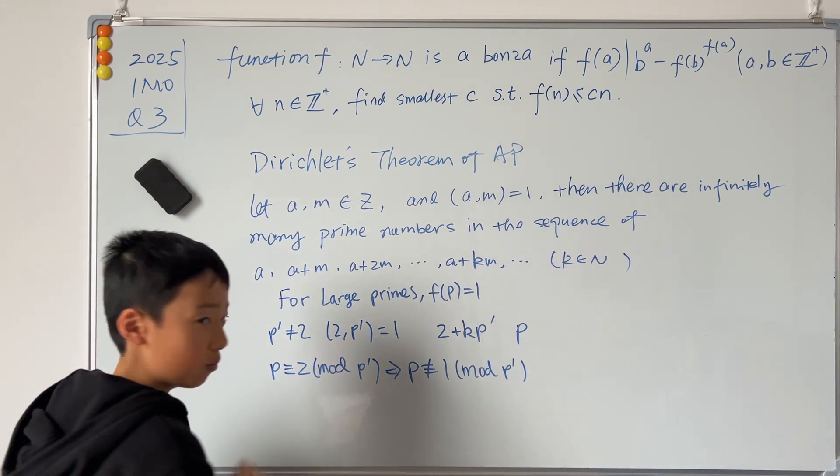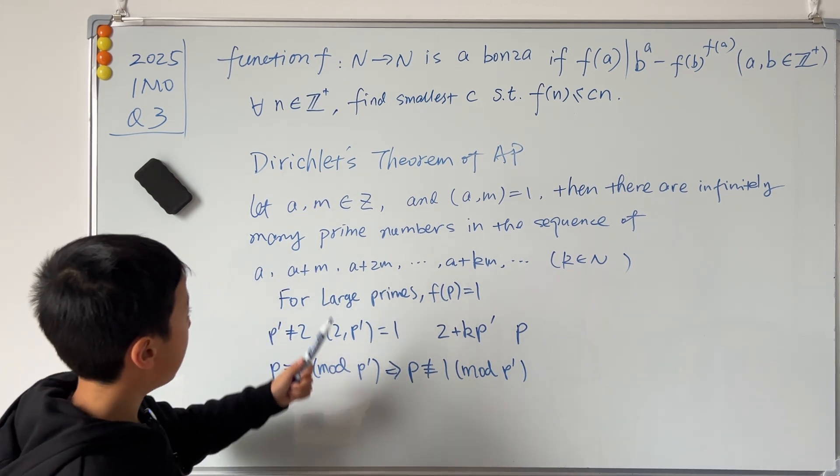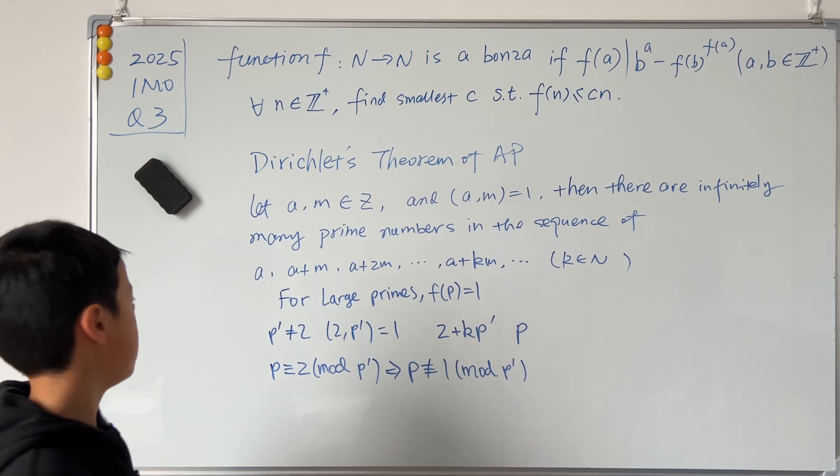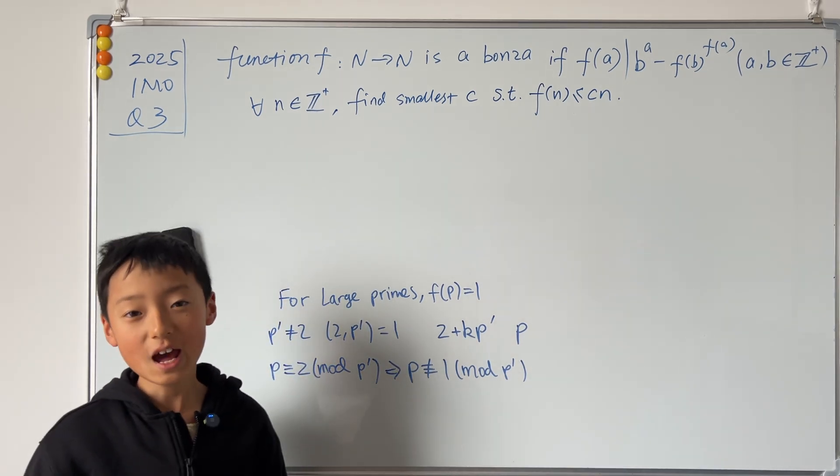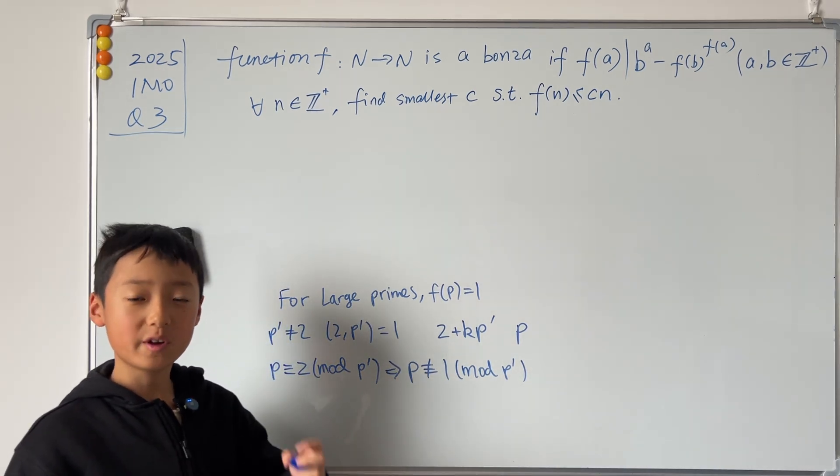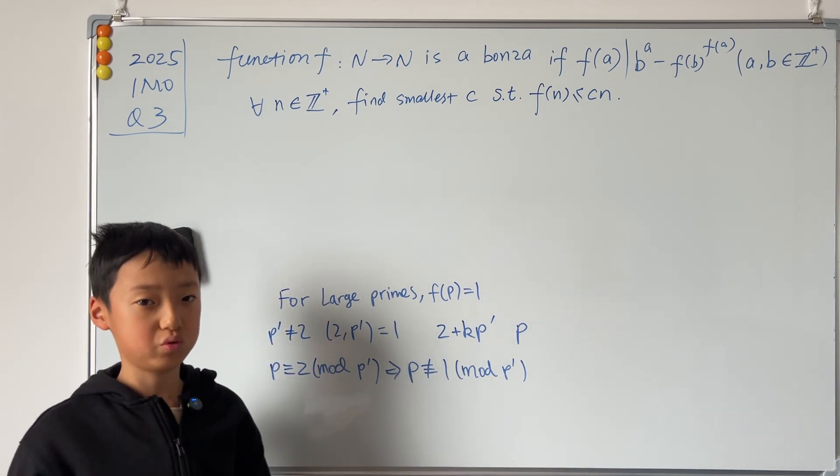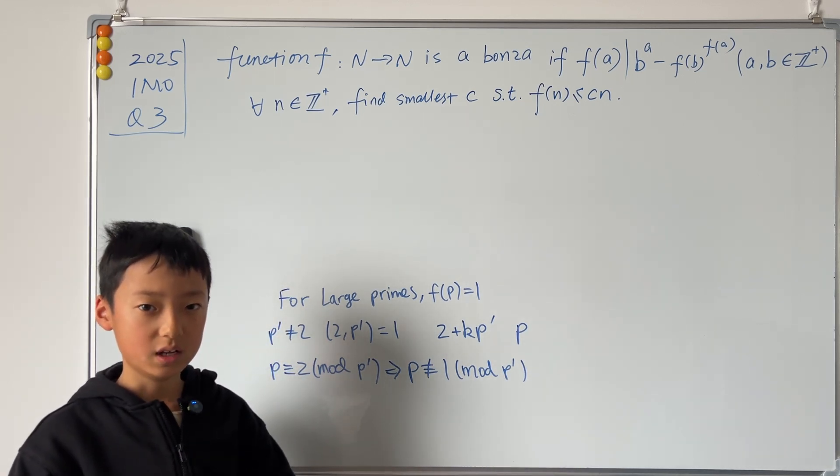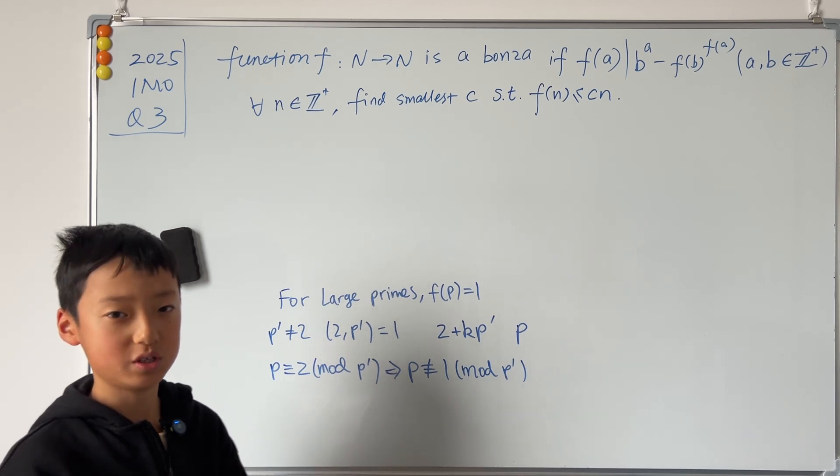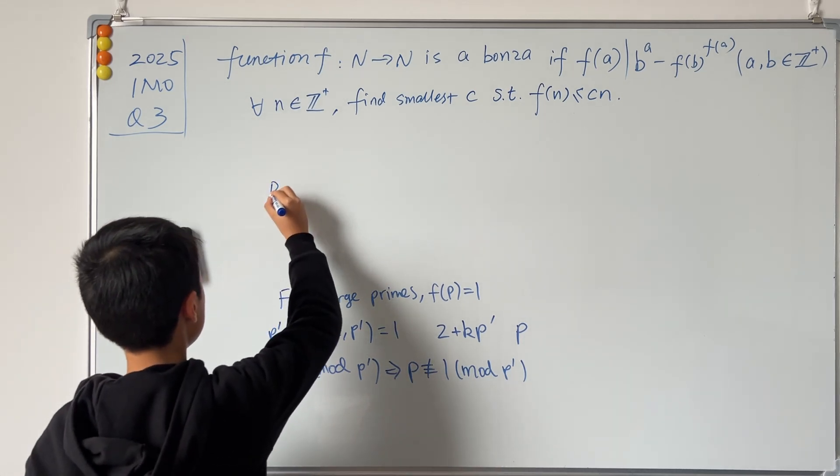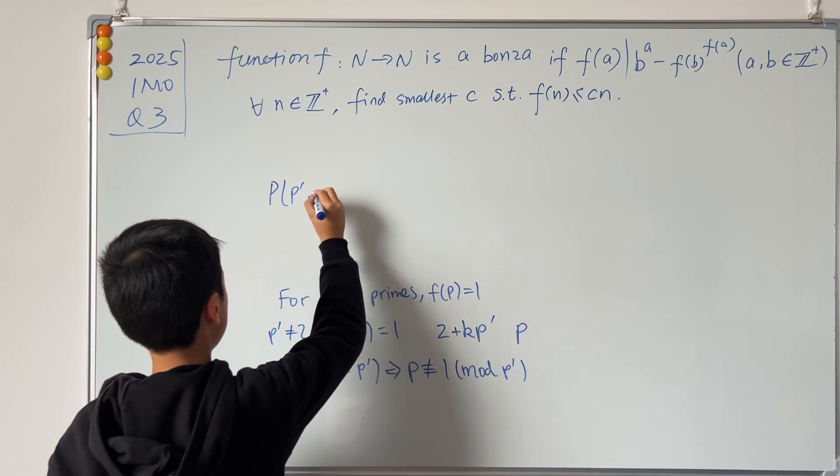So now, as you can see, I have no more space, so I'll just rub out this Dirichlet's theorem of AP. Now I'm going to try and figure out that f of any odd prime will be equal to 1. And to do that, I'm going to create a new property P(p', p).